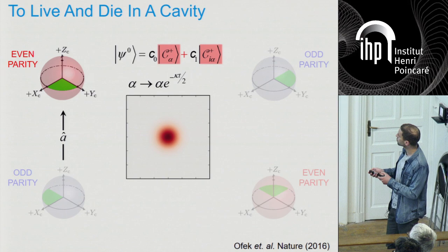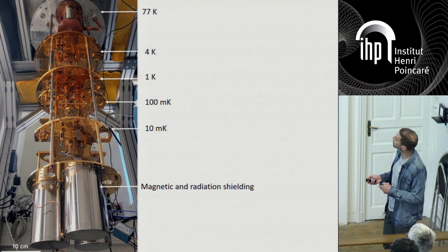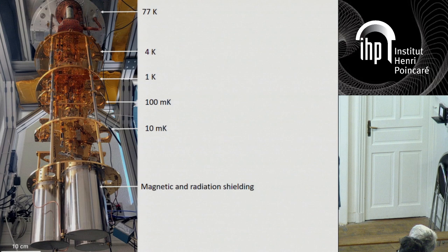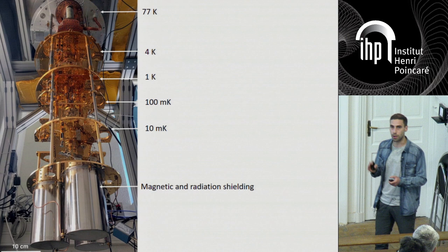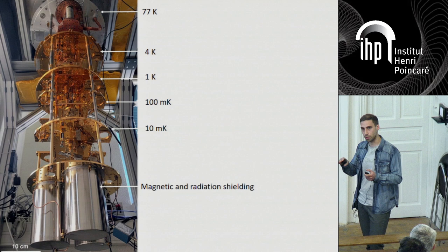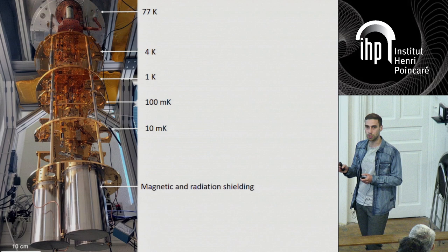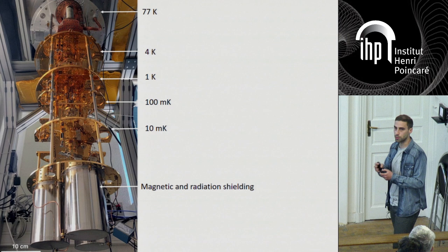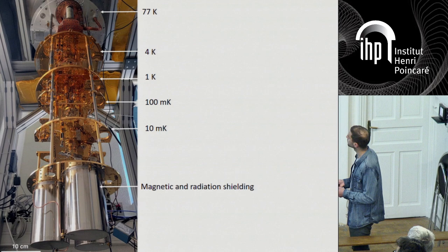If we just for now forget about this problem and look on short time scales, we can still do the experiments. The experiments look like this: we put our samples in big dilution refrigerators — this is basically a fridge, you can see the scale here. The point of this fridge is that it takes us down to very low temperatures of the order of 10 millikelvin. We need to go so low because we use superconductors that need to be below their critical temperature around 1 Kelvin, and we have electromagnetic modes around 5-10 GHz that need to not be thermally populated — below 100 millikelvin is sufficient, so 10 millikelvin is fine.